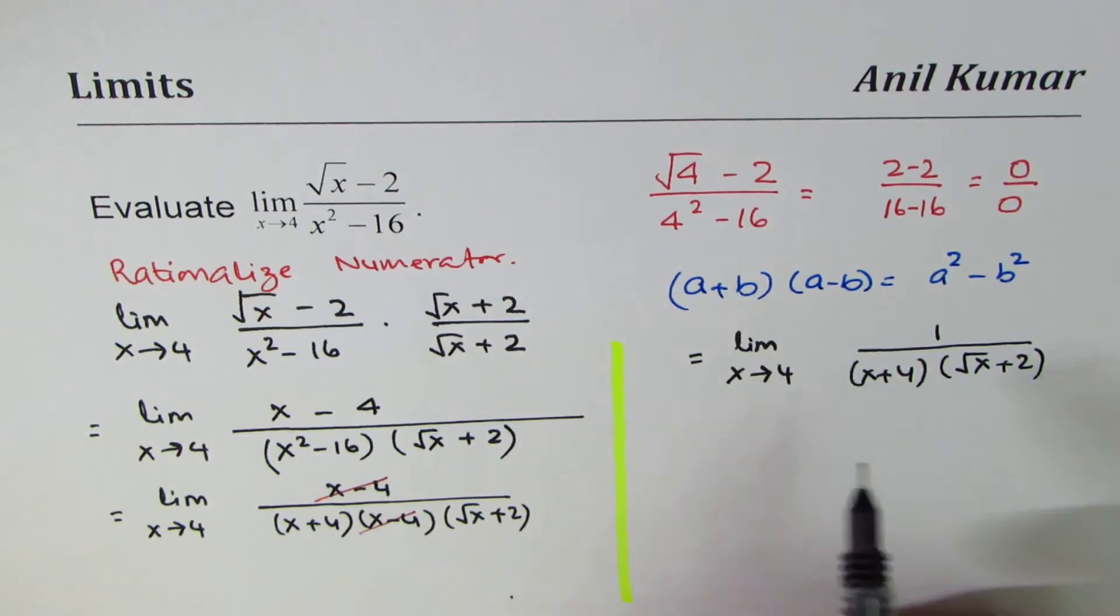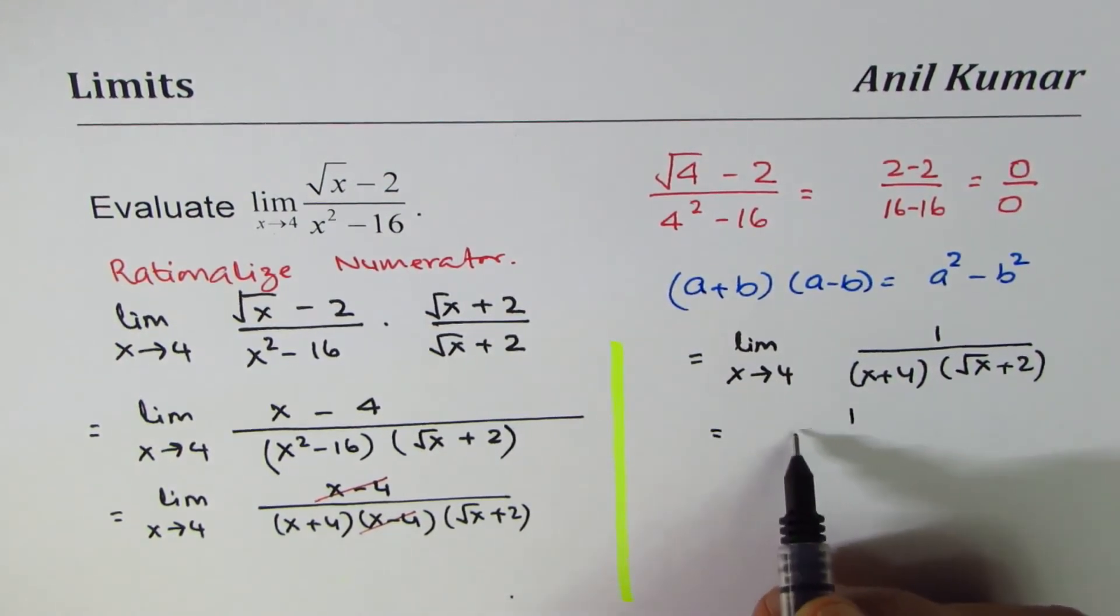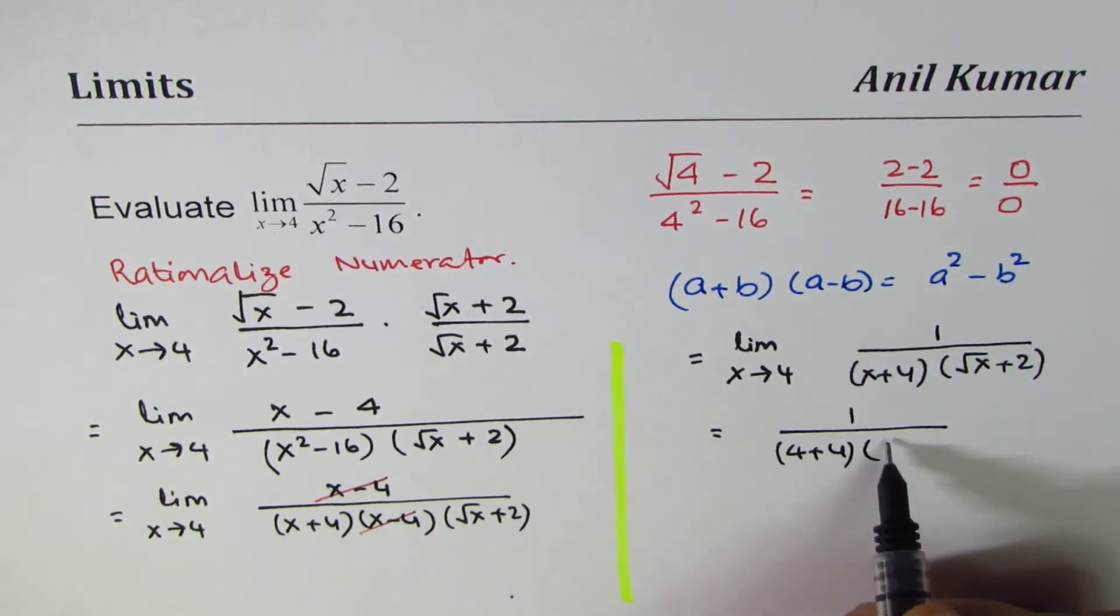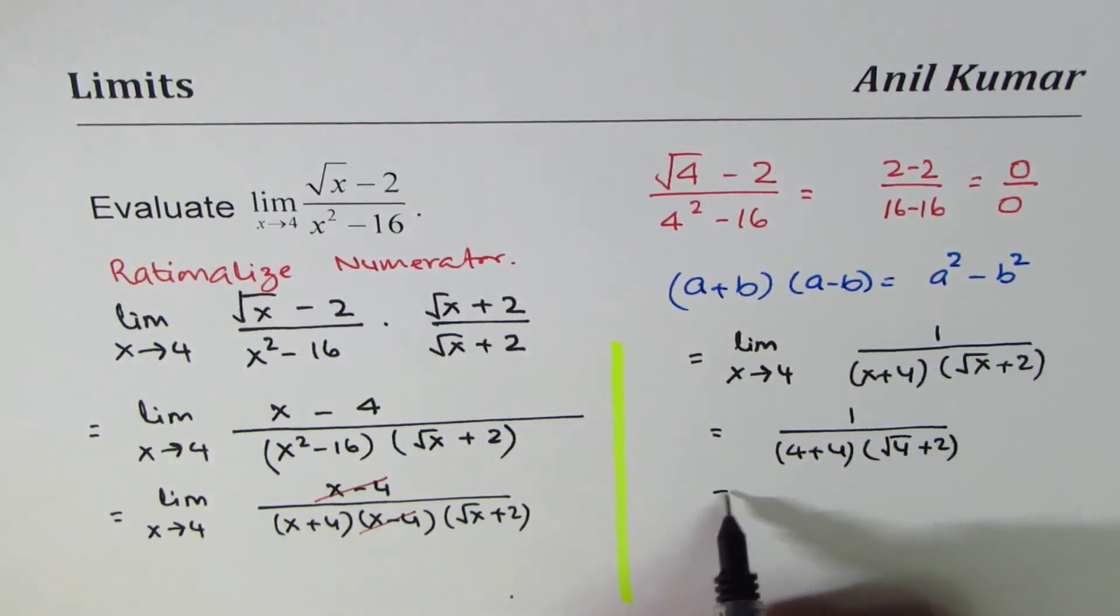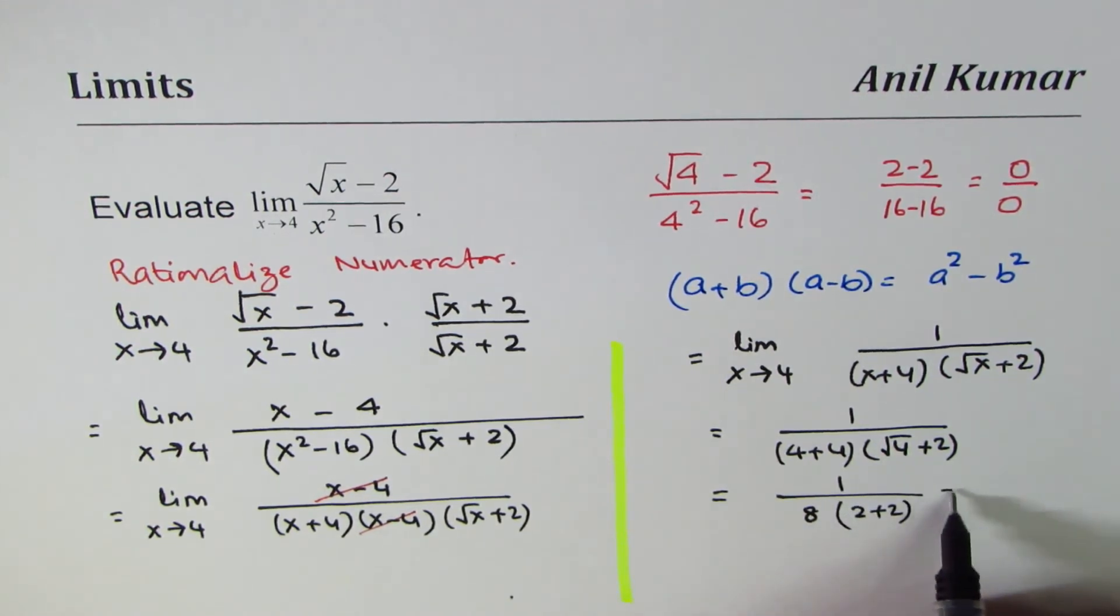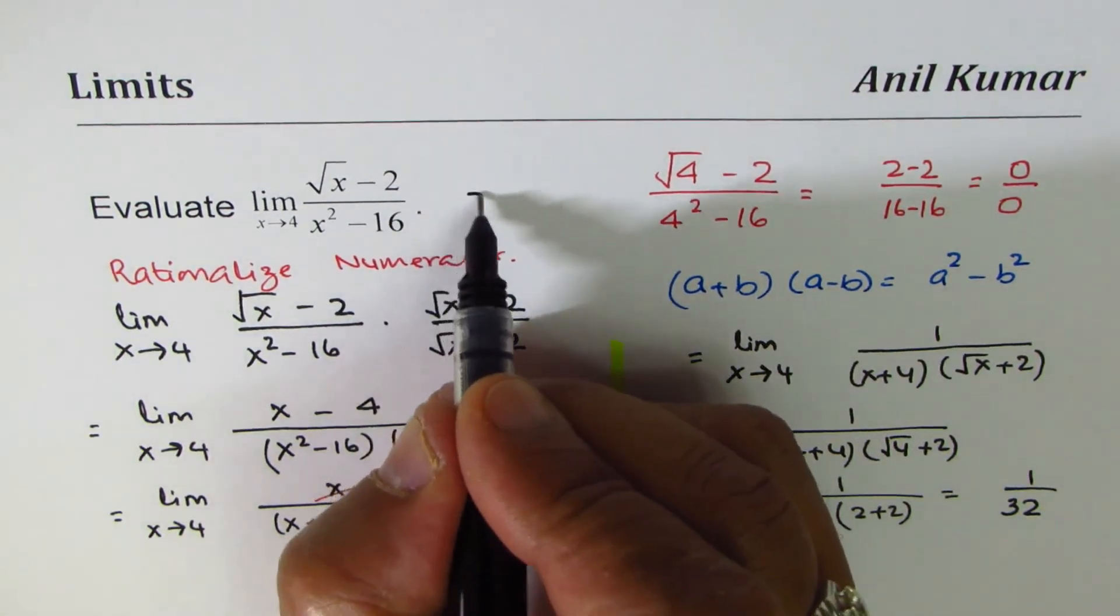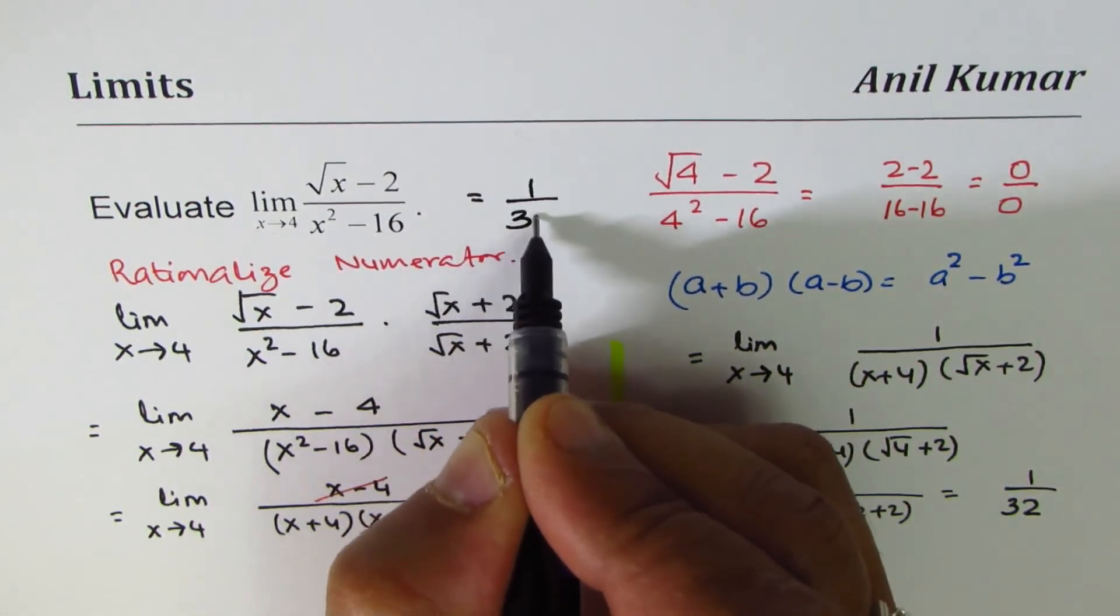Now we can substitute 4. And what we get here is 1 over 4 plus 4 times square root of 4 plus 2. And that is 1 over 4 plus 4 is 8, and here we have 2 plus 2 which is 4. So we get 1 over 32. So the limit of this function is 1 over 32.